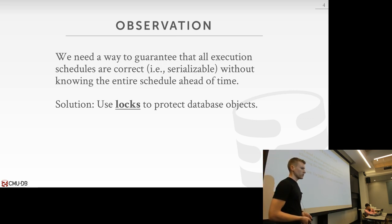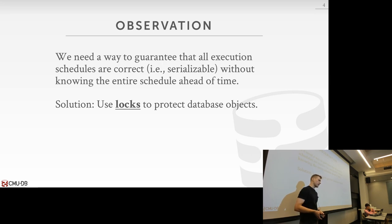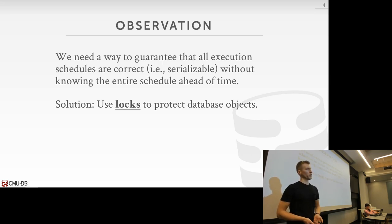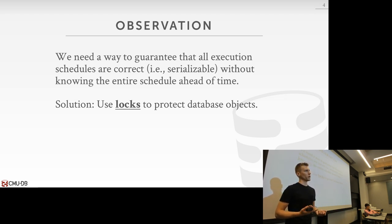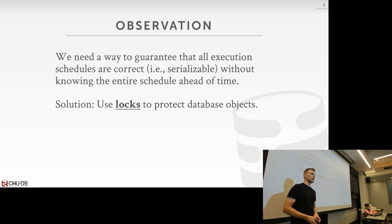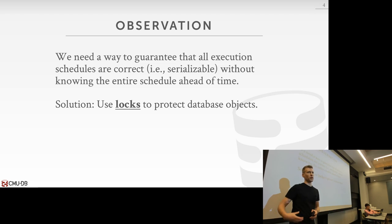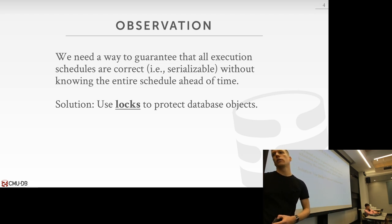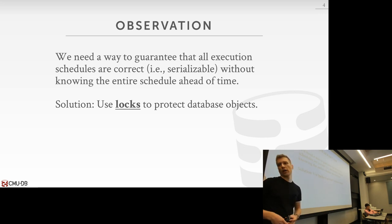Andy briefly mentioned pessimistic and optimistic approaches. Today we're going to look at two-phase locking — we're going to use locks in the system. This is a pessimistic approach because you have to ask for permission from the system before every operation. Before you can do a read or write on a tuple, you have to ask for a lock on that object. We'll get to optimistic approaches in the next couple of lectures.